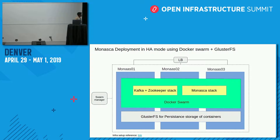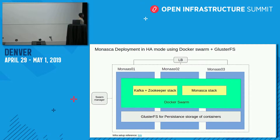Here is our deployment architecture. We created three bare metal servers for Monasca in Docker swarm mode. We separated the stack files: Kafka and Zookeeper in one stack and Monasca in a separate stack. We also added Kafka Manager to monitor Kafka latency, and we use GlusterFS for persistent storage of containers. When running Docker swarm, GlusterFS ensures data is synced and copied across all paired nodes when containers restart.